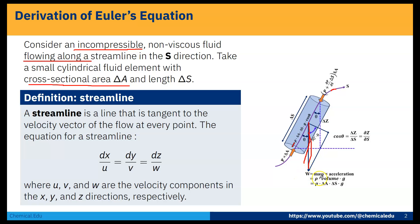W is mass times gravitational acceleration, equal to ρ × volume × g. So W = ρ × δA × δS × g, where δA is the cross-sectional area and δS is the length of the fluid element.